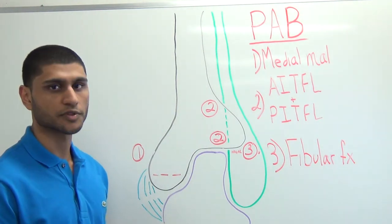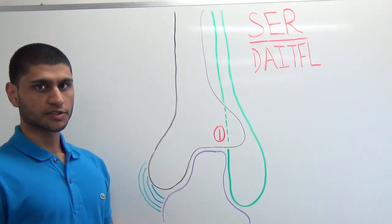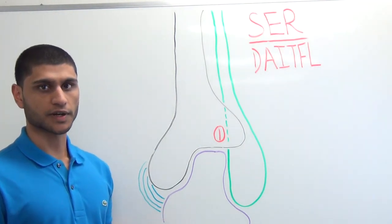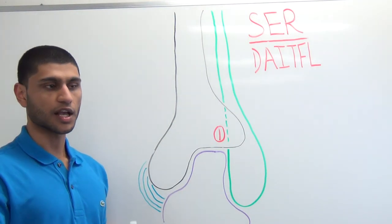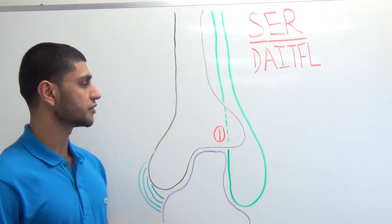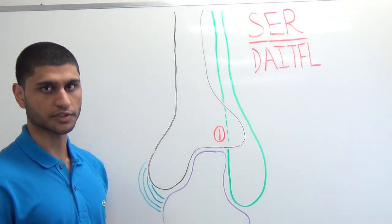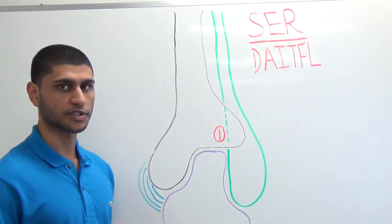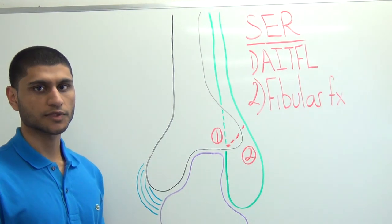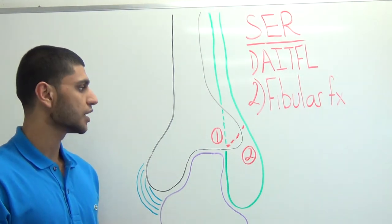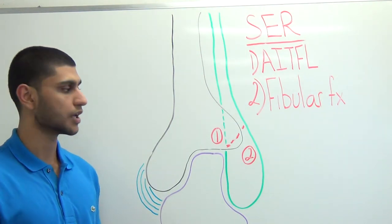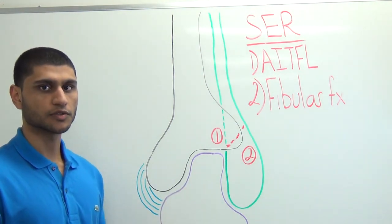Next we move on to the supinatory injuries. We'll begin with SER — supination external rotation — which is by far the most common mechanism of injury of ankle fractures. The foot begins in a fixed supinated position and some force causes the talus to rotate laterally, just like PER. In SER1, there's injury to the anterior inferior tibiofibular ligament, and the same potential injuries as PER2 apply. SER2 is the most common SER injury and is often tested on boards — it is a spiral oblique fracture of the fibula beginning at the level of the ankle joint, making it a Danis-Weber B. The fracture line courses from anterior-inferior to posterior-superior.